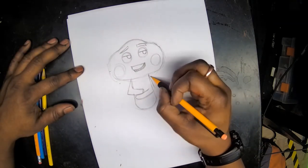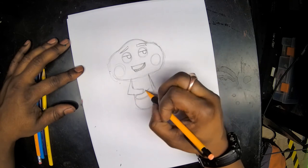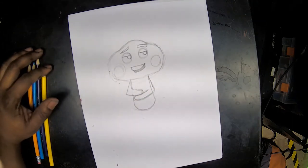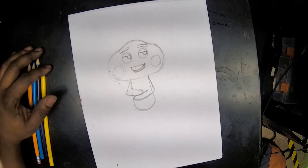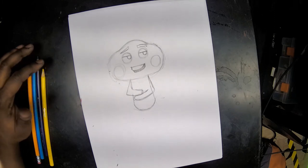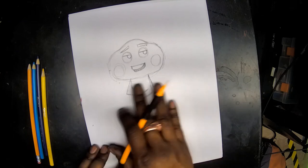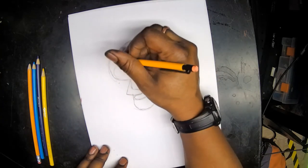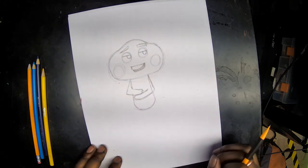So we make that L shape going the other way, or an angle shape going the other way, and then kind of cross. Now we are going to ink and color.